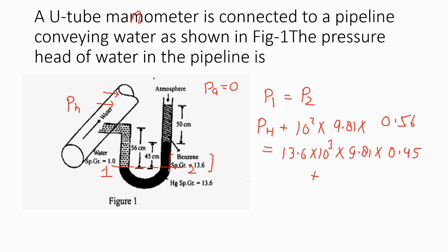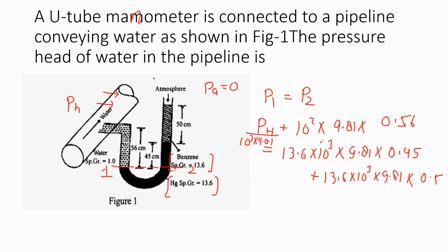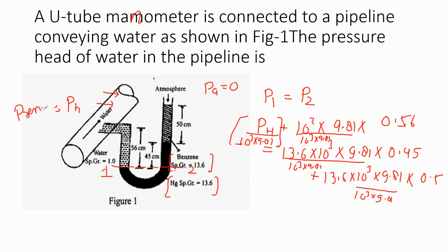The specific gravity of mercury is 13.6. We will solve this: 13.6 times 10³ times 9.81 times 0.5. Now what we can do is divide by 10³ times 9.81 everywhere — here, here, here, and here — to convert to pressure head.